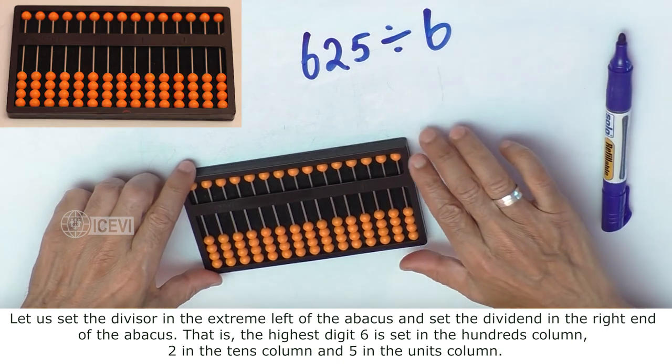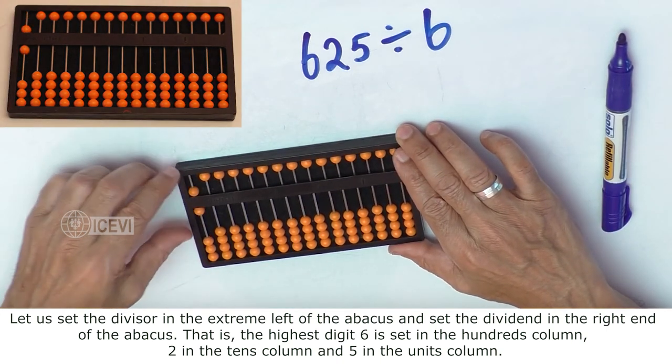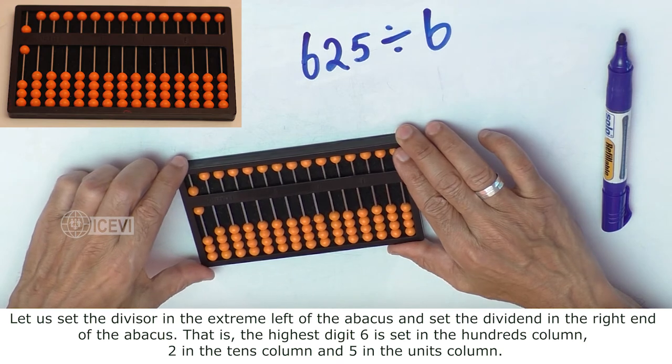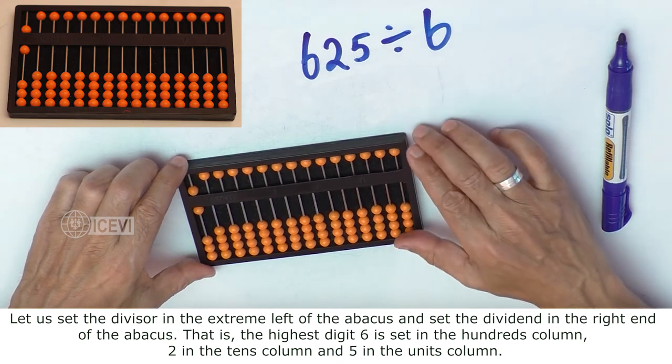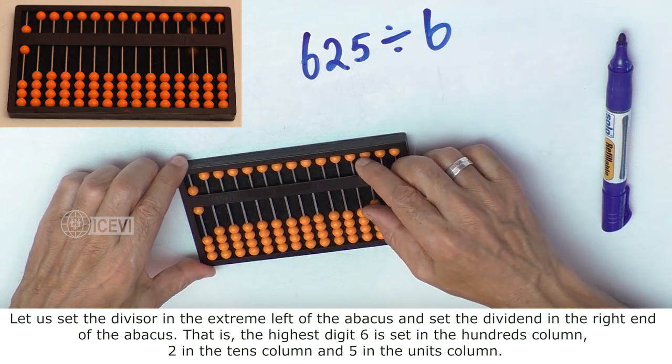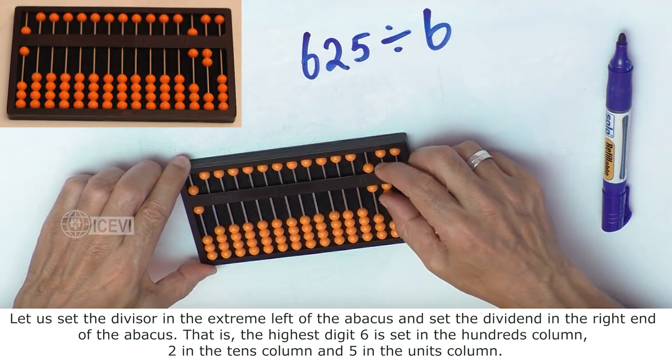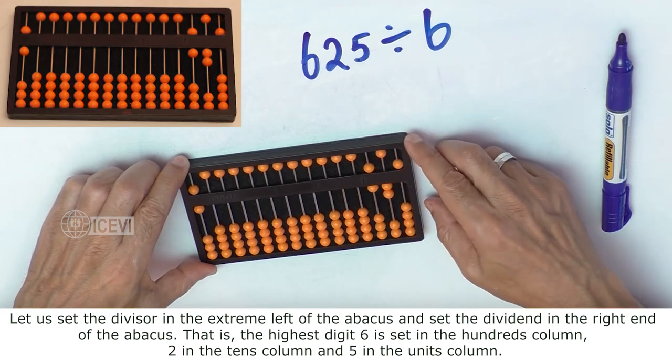Let us set the divisor in the extreme left of the abacus and set the dividend in the extreme right of the abacus. That is, the highest digit 6 is set in the 100s column, 2 in the 10s column, and 5 in the units column.